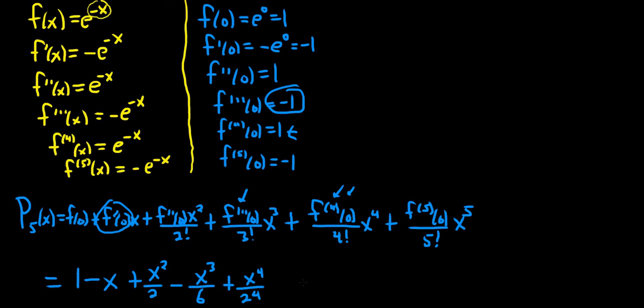And the last one is 5 factorial, which is, I believe, 120. And it's negative. So it'll be minus x to the 5th over 120.